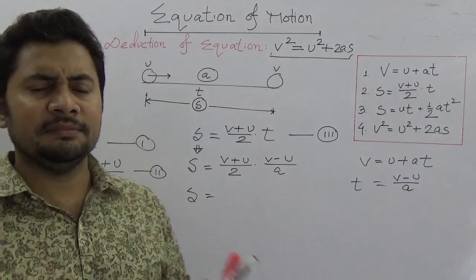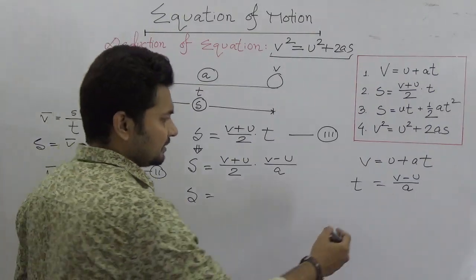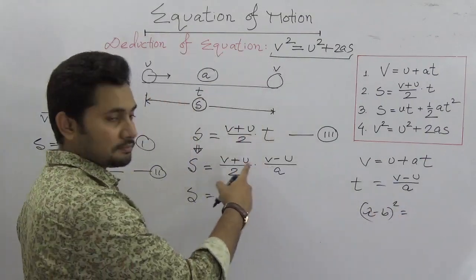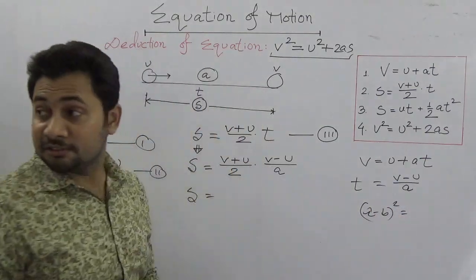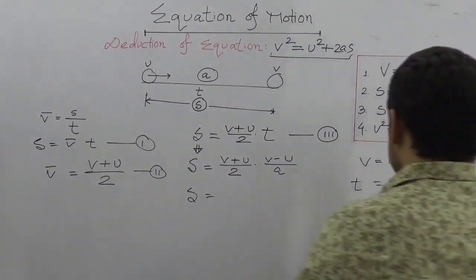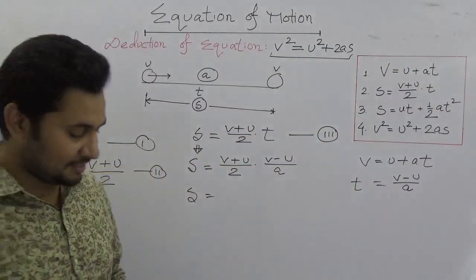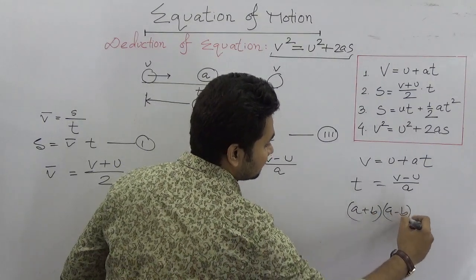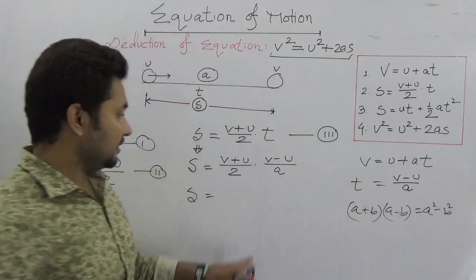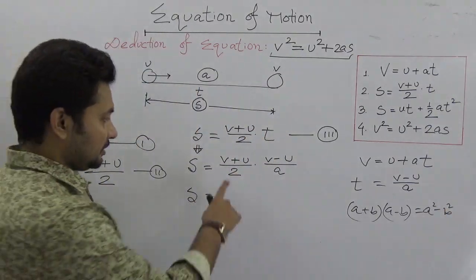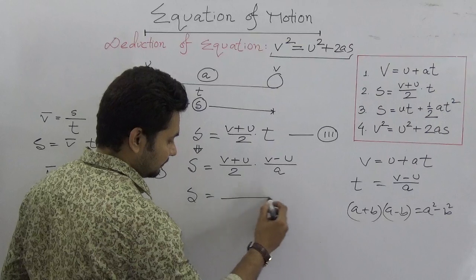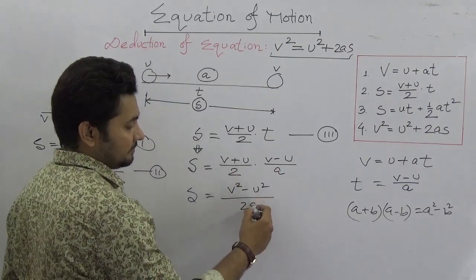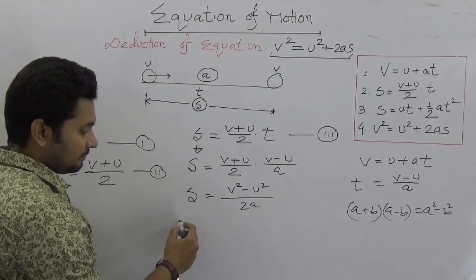If we need to find a, it's a very simple calculation using the principle of algebra. We know (a + b)(a - b) = a² - b². So (v + u)(v - u) will be v² - u², giving us the equation 2as = v² - u².